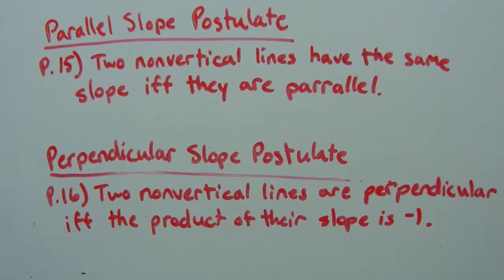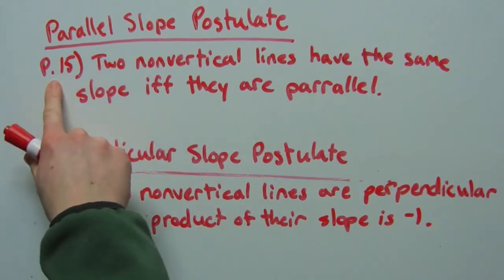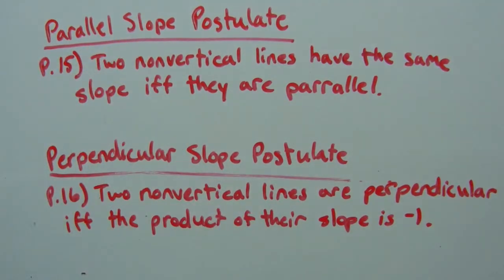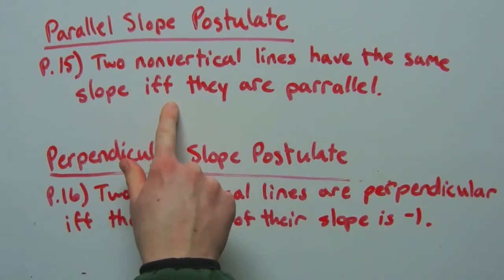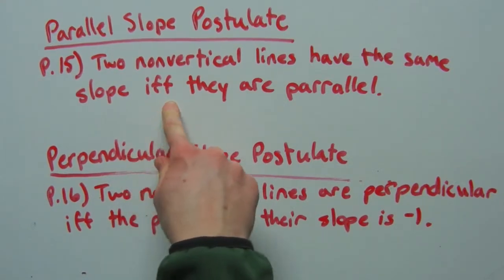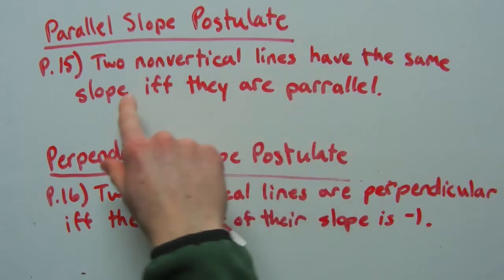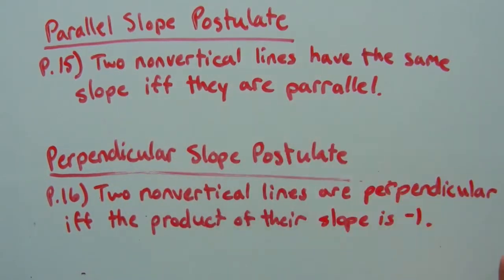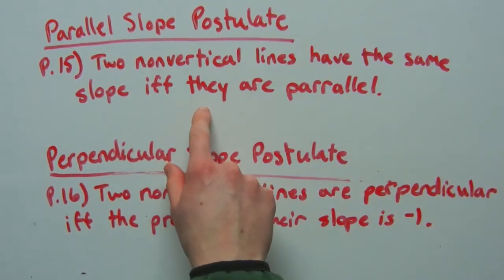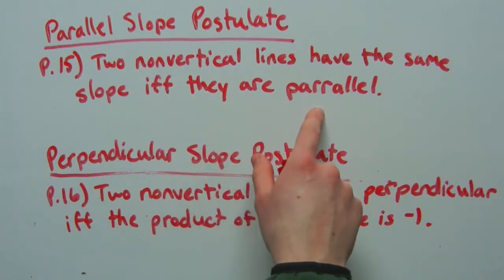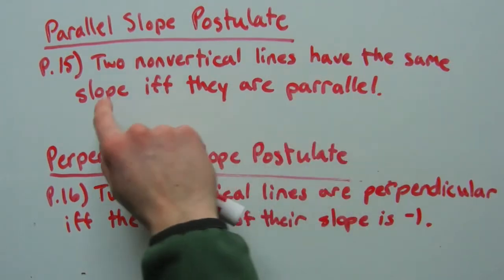Next, we're going to go over the parallel slope postulate and the perpendicular slope postulate. P15, the parallel slope postulate, says that two non-vertical lines have the same slope if and only if they are parallel. IFF stands for if and only if, so we can say this postulate in two ways: if two non-vertical lines have the same slope, then they are parallel; or if two non-vertical lines are parallel, then they have the same slope.